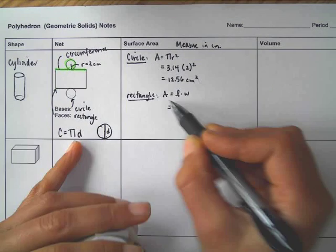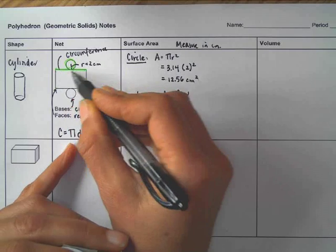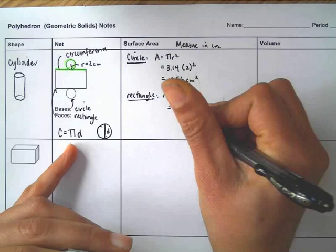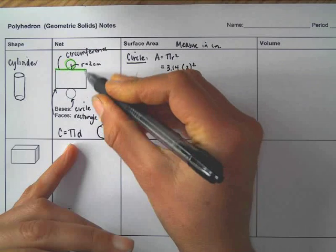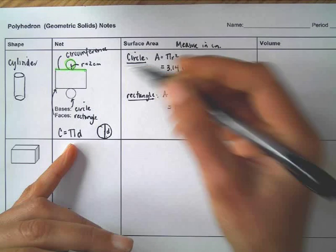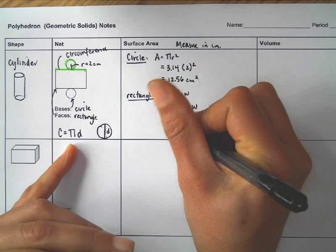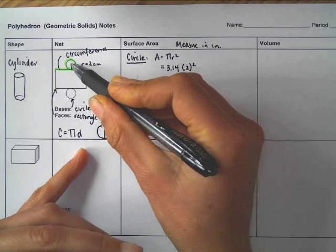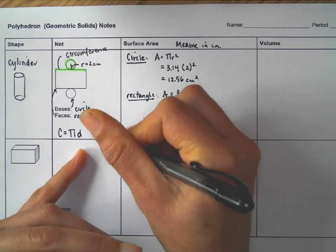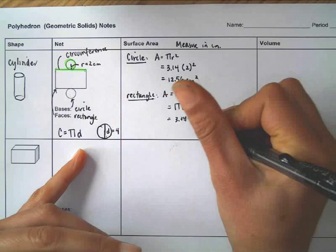I'm going to say that the length right here we said is the circumference, which is pi times diameter, and then I still need to multiply it by the width. So 3.14, the radius was 2, so the diameter is twice that amount, so 4 centimeters.